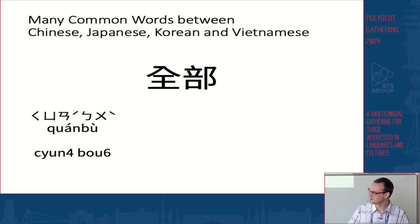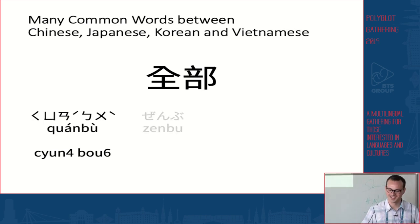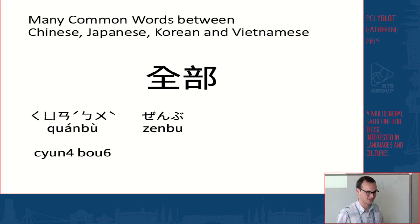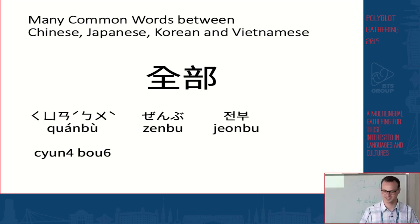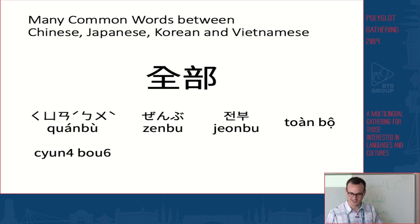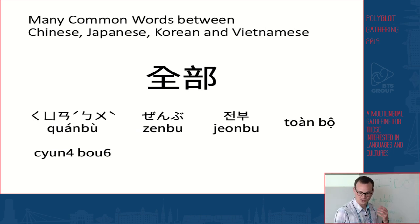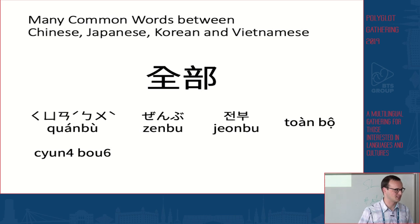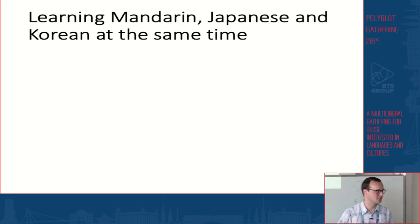This word can be 'quánbù' in Mandarin Chinese, and it also has other readings in Cantonese and other regional Chinese languages. It's pronounced 'zenbu' in Japanese and 'jeonbu' in Korean — and you can also pronounce it in Vietnamese. This property of having Chinese characters that represent the same word in multiple languages is very interesting if you're learning multiple of these languages at the same time. I personally took advantage of this, having been learning Mandarin, Japanese, and Korean simultaneously.